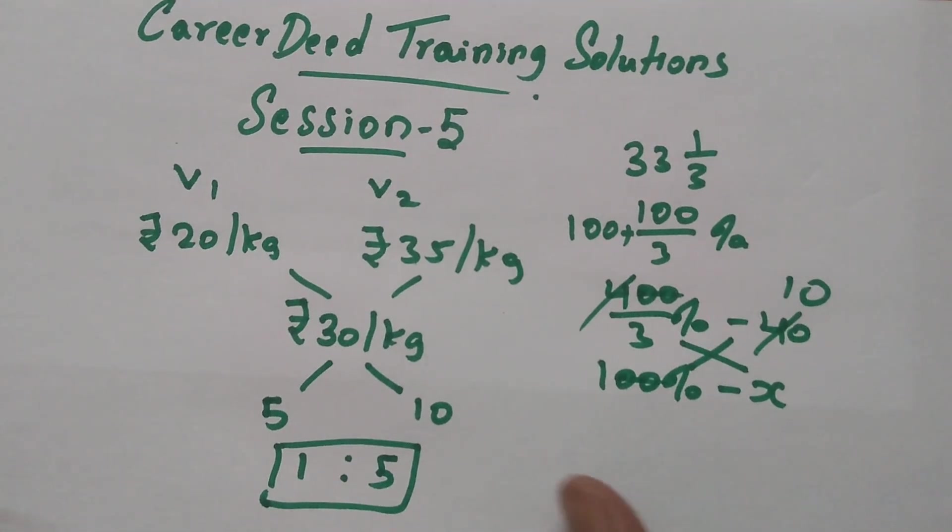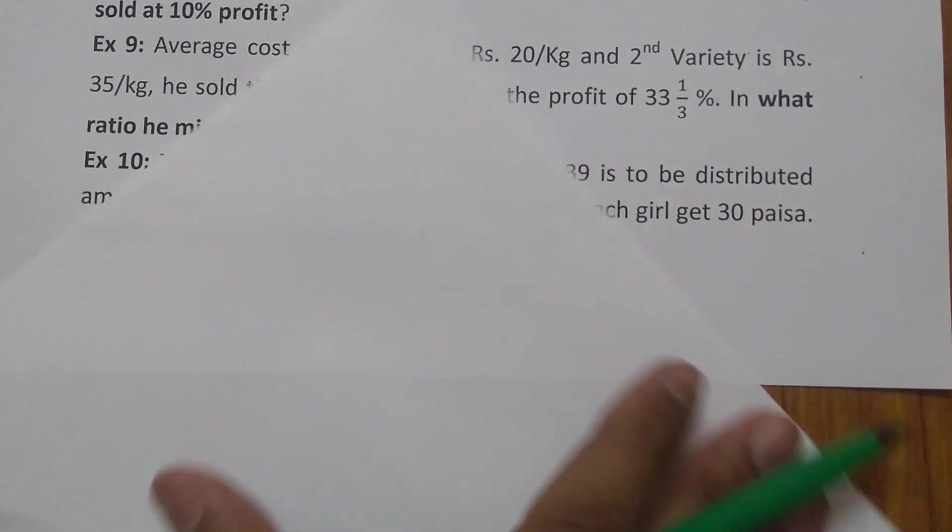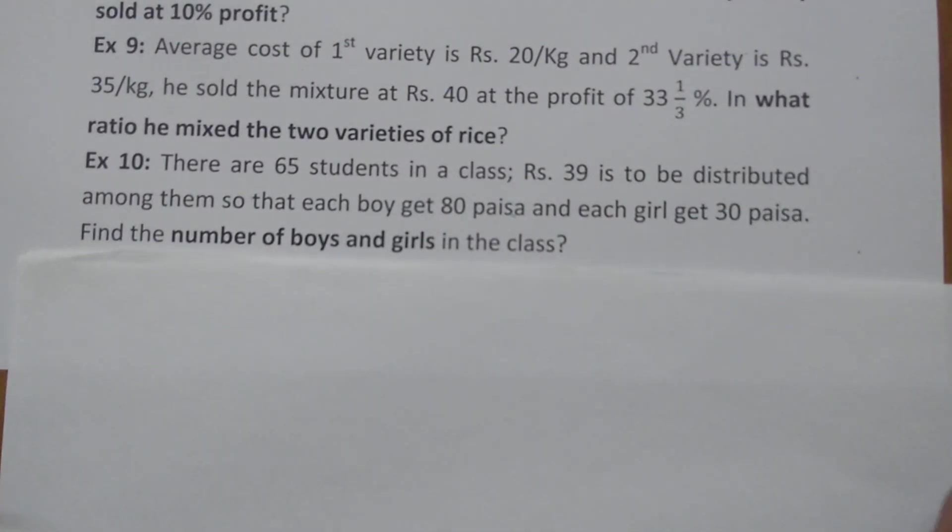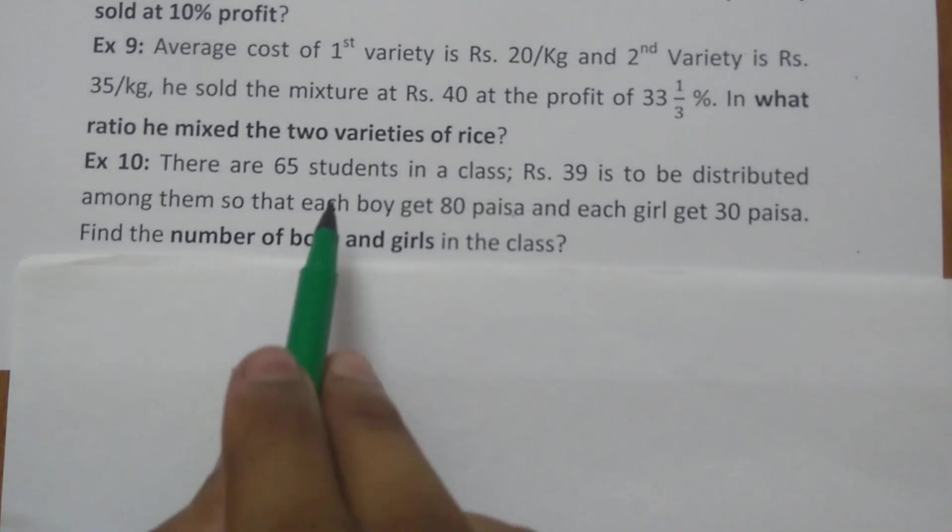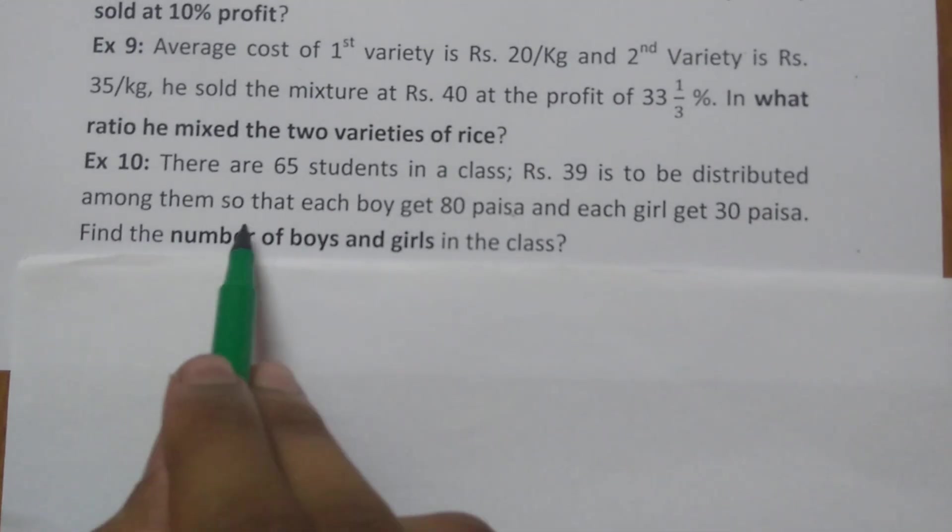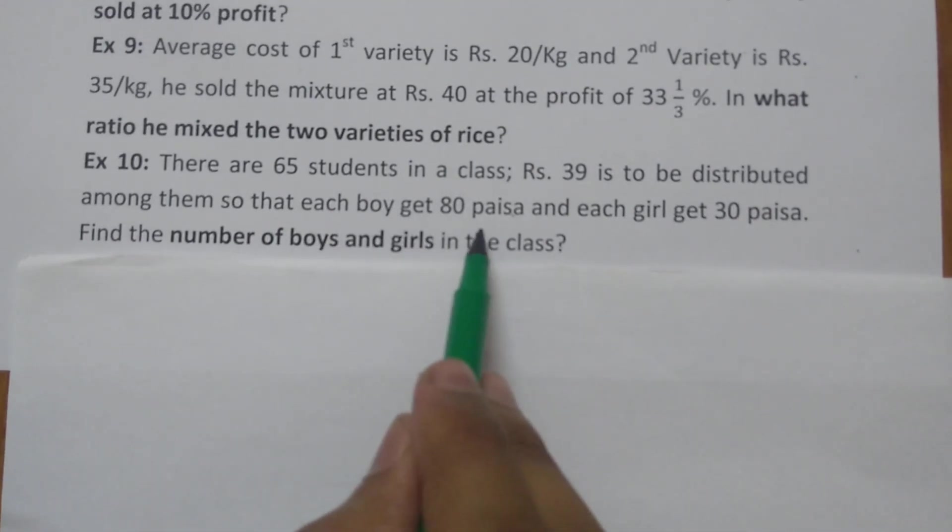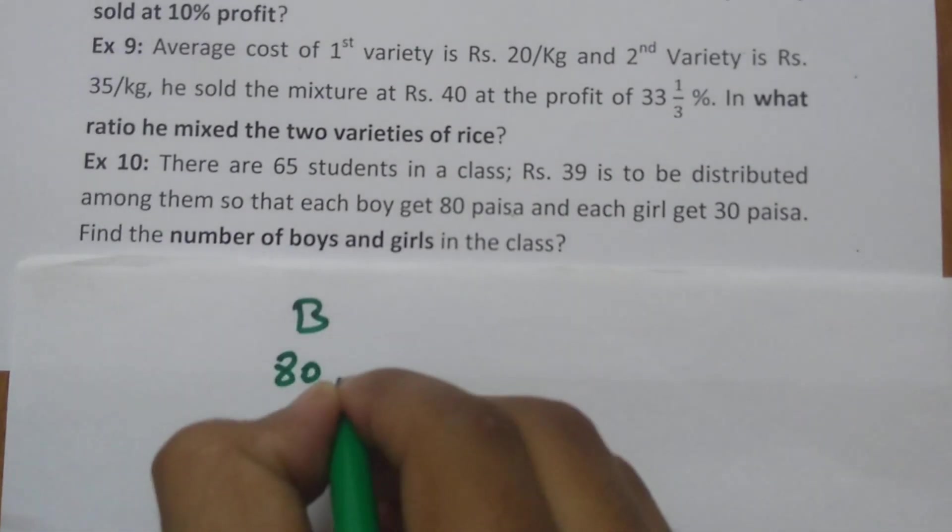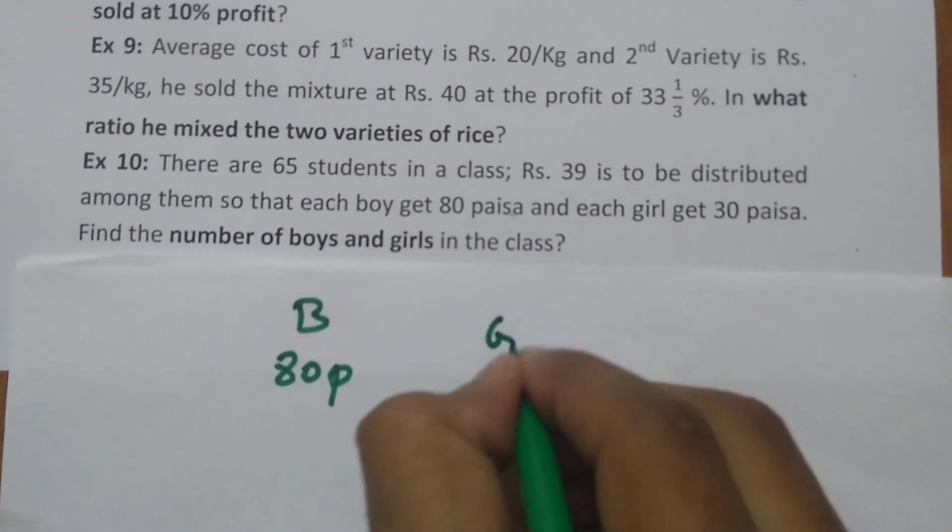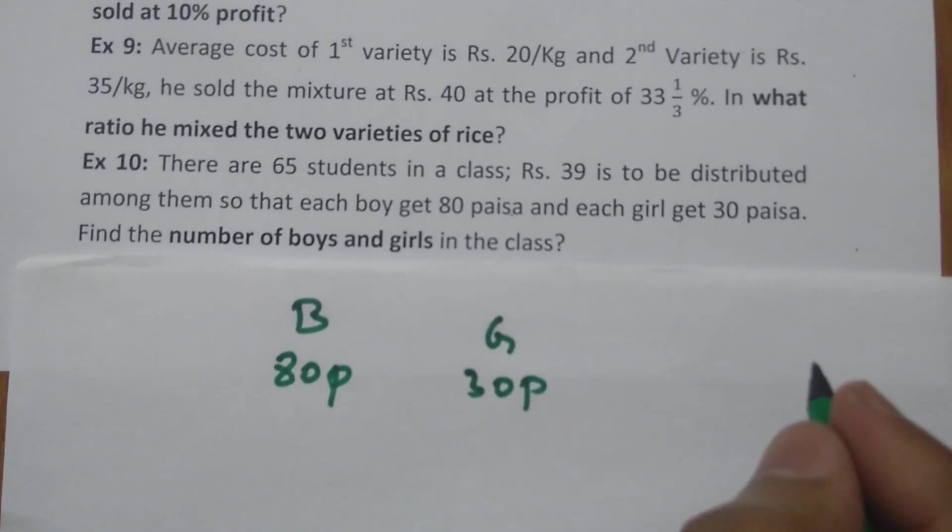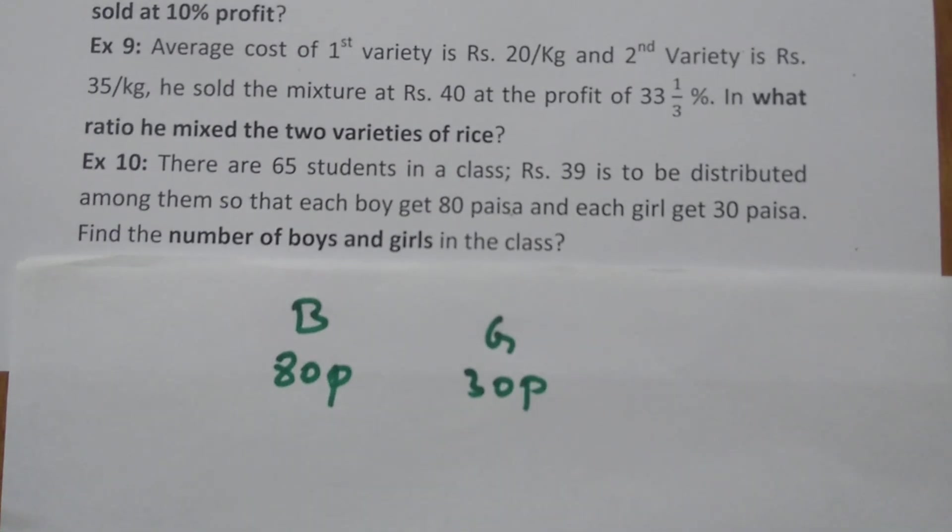Now the last question. There are 65 students in the class. Rs. 39 is to be distributed among them so that each boy gets 80 paisa and each girl gets 30 paisa.